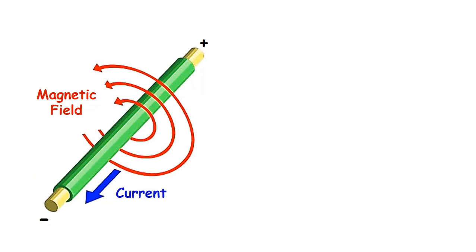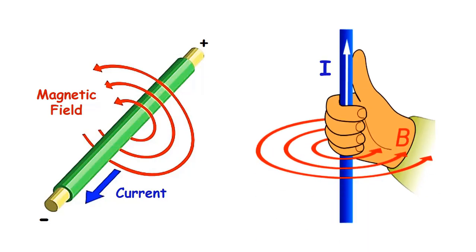To understand the working principle of the coil better, we need to have a look at Ampere's law. According to this law, a magnetic field is formed around a conductor that carries a certain current. The intensity of this magnetic field is directly proportional to the intensity of the current. If the current flowing through the conductor is DC, the magnetic field is constant, and if the flowing current is AC, the direction of the magnetic field constantly changes.